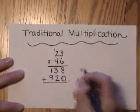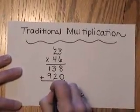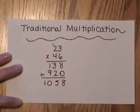and then you would add 8 plus 0 is 8, 3 plus 2 is 5, 9 plus 1 is 10, so you would have 1058.